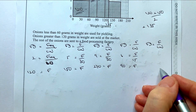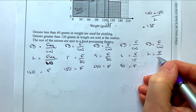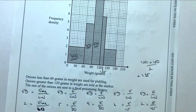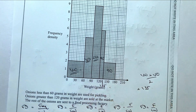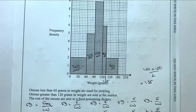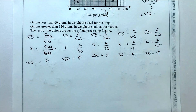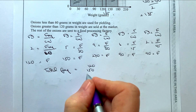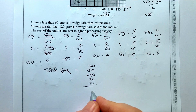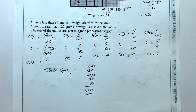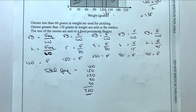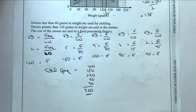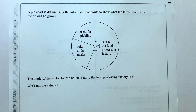For the final block: frequency density = 2, class width = 45, so frequency = 90. Those last two blocks are both 90 onions each. We can now find the total frequency by adding all values: 120 + 150 + 270 + 90 + 90 = 720. So this particular farmer has grown 720 onions.